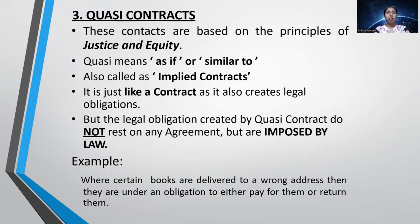Quasi-contract: when there is no intention to enter into a contract, but the law imposes an obligation to do so. This is not actually a real contract — due to moral, ethical principles, and justice, you are brought into an obligation. For example, where certain goods are delivered to the wrong address, the owner of those goods must return them either to the courier office or to the rightful owner. That is called a quasi-contract.